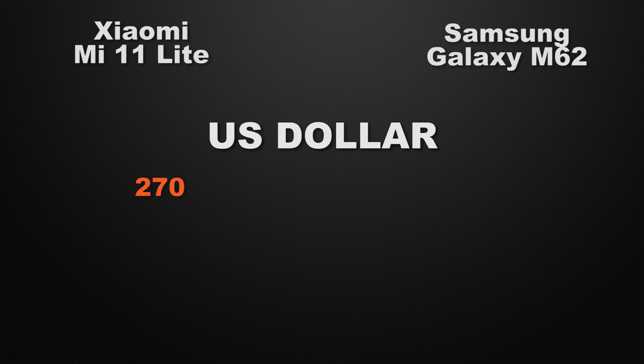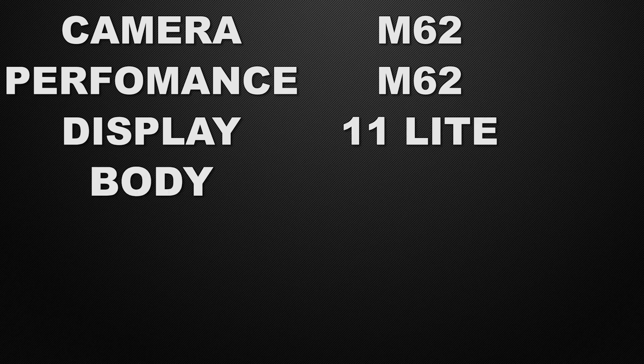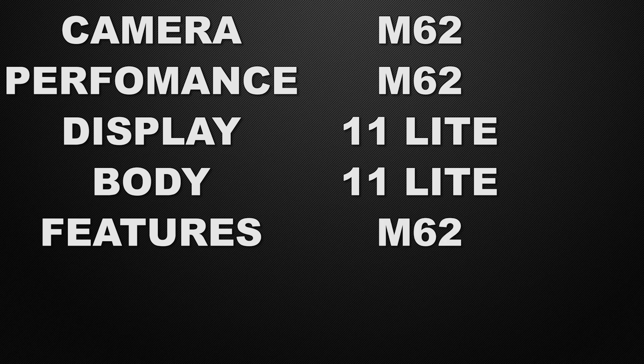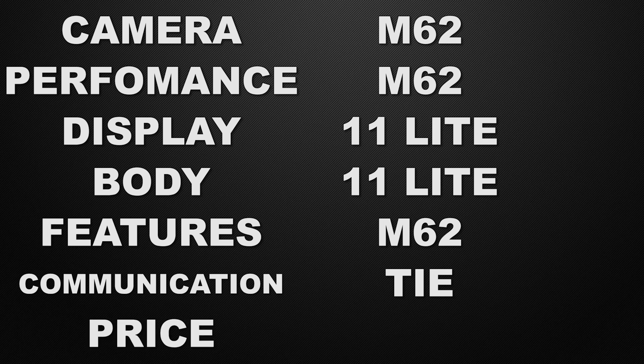For pricing, in the international market the 11 Lite is around $270 while the M62 is available from $300. In the Indian market the 11 Lite starts from 22,000 rupees while the M62 starts from 24,000 rupees. In conclusion: camera winner is M62, performance winner is M62, display winner is 11 Lite, body winner is 11 Lite, features winner is M62, communication chips are a tie, and on price the winner is 11 Lite.